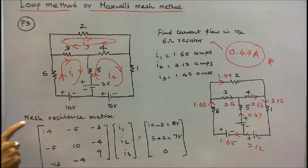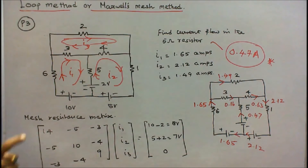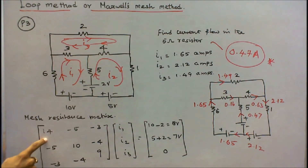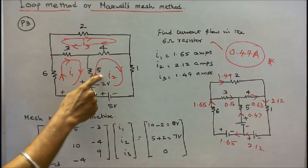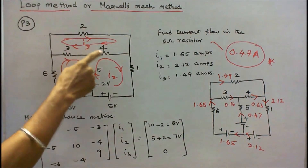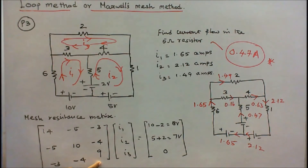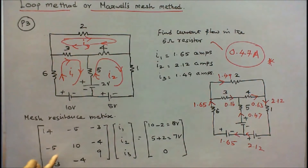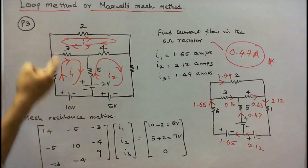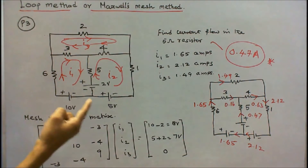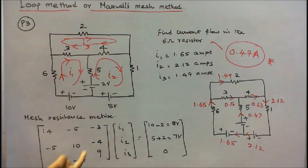First we form the mesh resistance matrix. The diagonal elements: first loop resistance is 6 plus 3 plus 5 = 14; second loop resistance is 5 plus 4 plus 1 = 10; third loop resistance is 3 plus 4 plus 2 = 9. The resistor common to loops 1 and 2 is 5 ohm, direction minus, so minus 5. Common to loops 1 and 3 is 3 ohm, so minus 3. Common to loops 2 and 3 is 4 ohm, so minus 4.